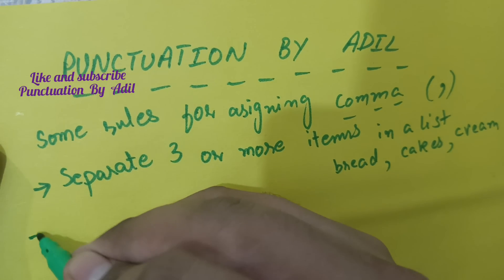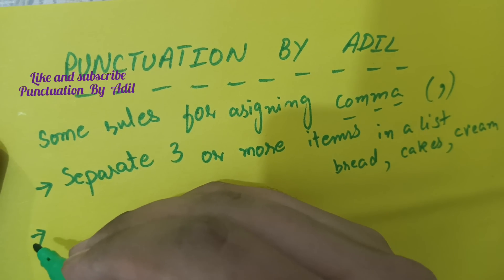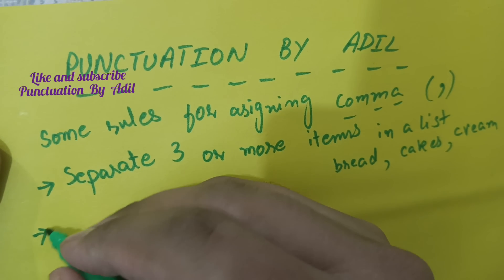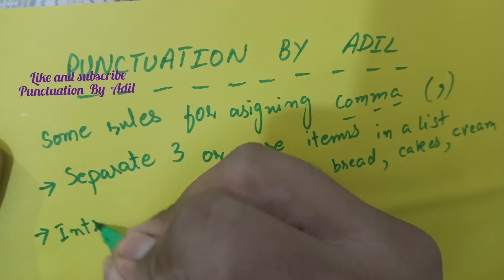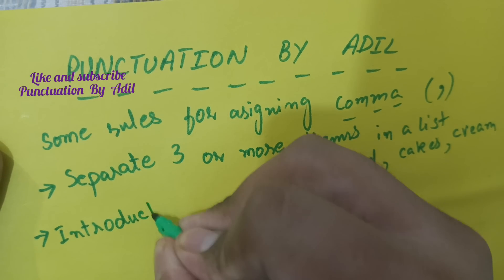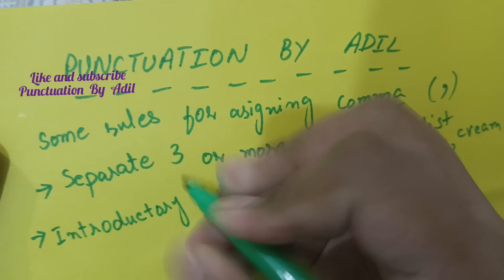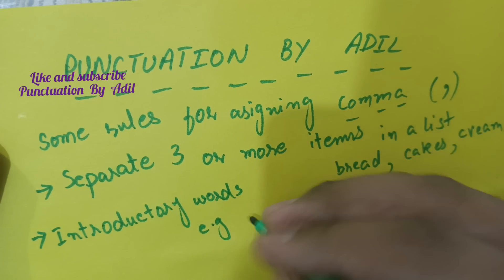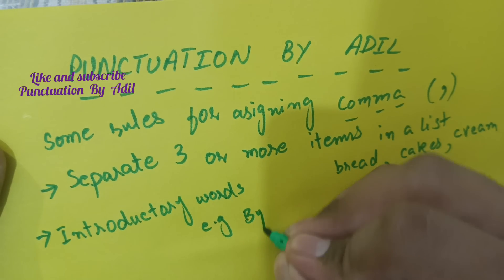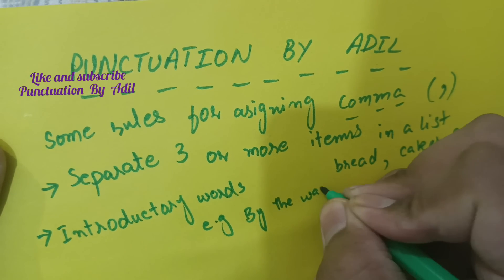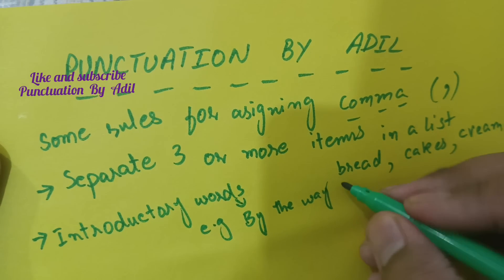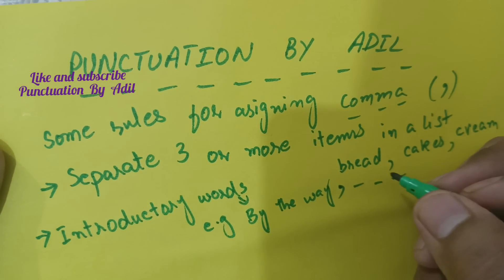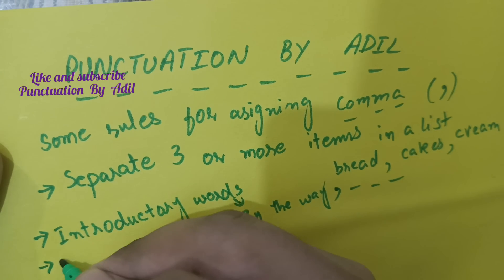Our second rule for using a comma is that a comma is used to separate introductory words. For example, if you say 'by the way, I am going to my house' — 'by the way' is an introductory word, so we place a comma after it and then write the remaining sentence.